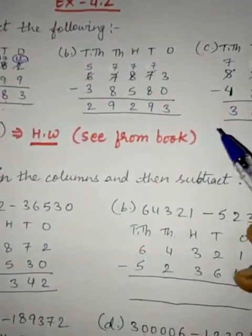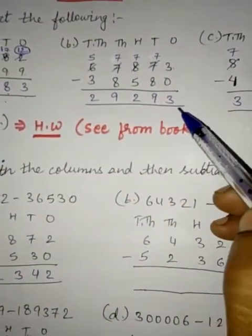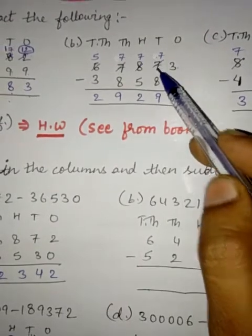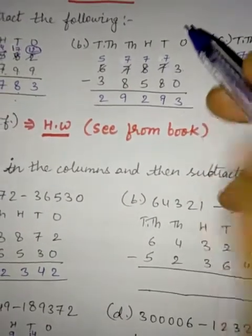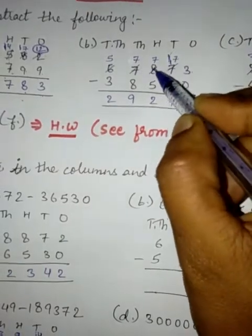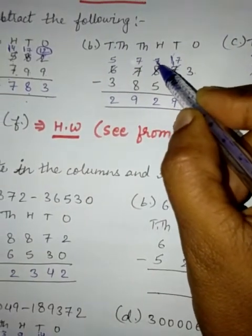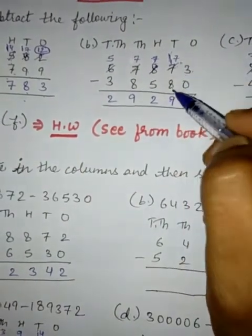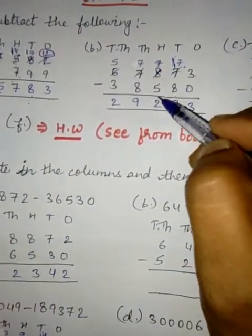Now question number B. 3 minus 0 is 3. 7 minus 8, it is not possible. So this 7 will become 17 and this 8 will become 7. So 17 minus 8 will become 9. And 7 minus 8 will become 9.